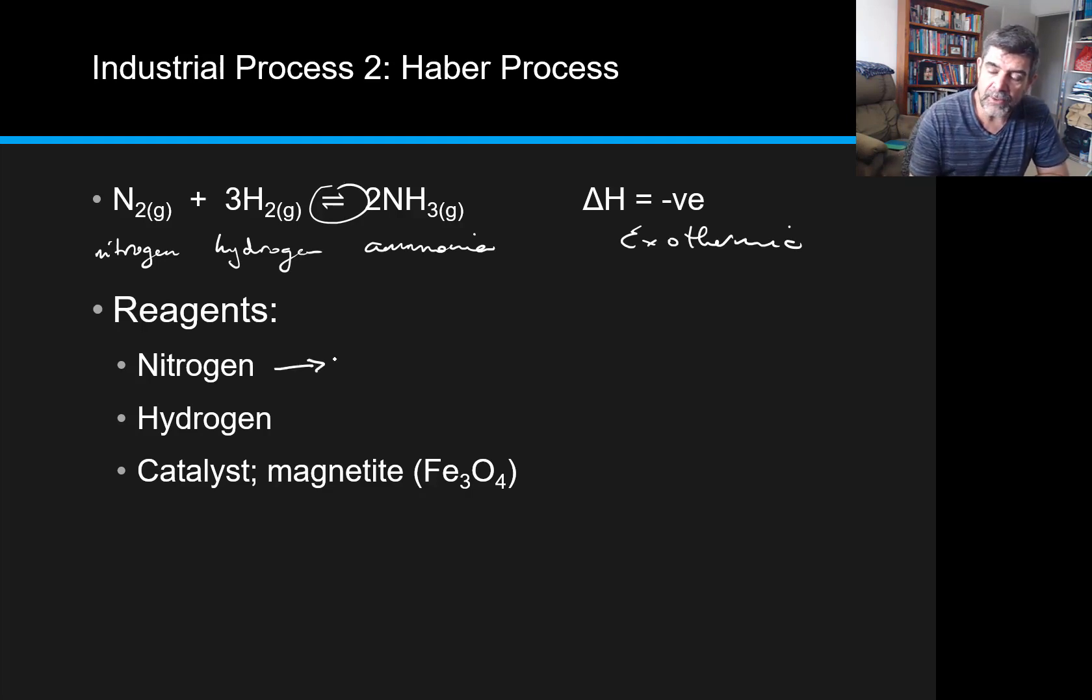We can talk about this as we talked about previously, the availability of reagents. Nitrogen we could get from the air. Hydrogen can be generated in a number of chemical reactions.